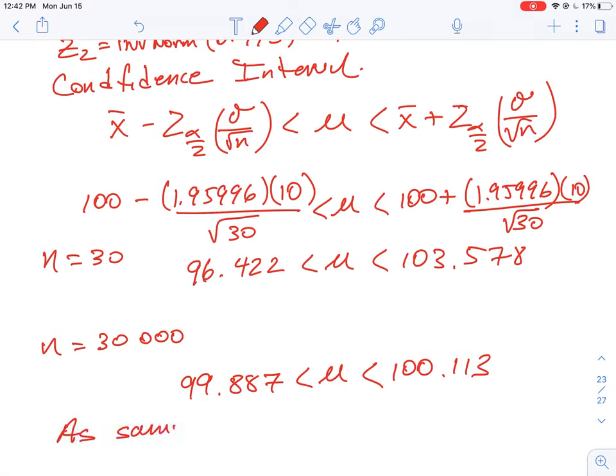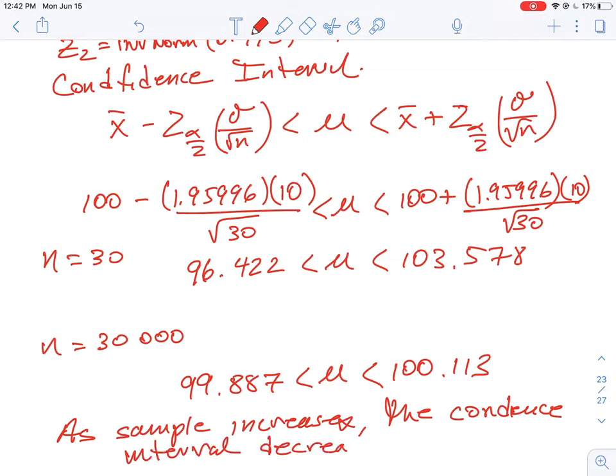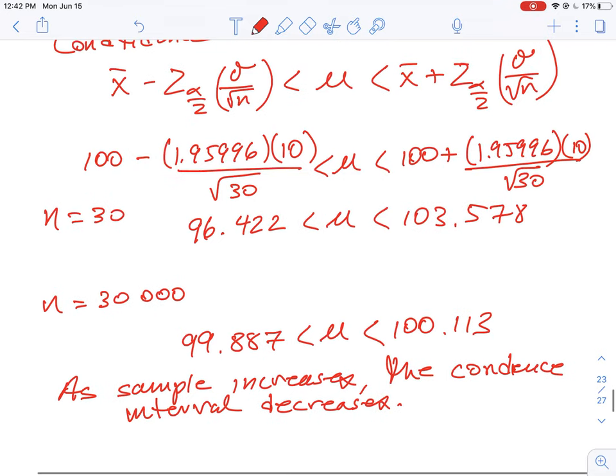So what that tells us is that as we increase the sample size, the confidence interval decreases. The actual range of values gets a little bit more accurate because we have a larger sample to work with. That's one of the rules that you want to see from the patterns here. So the first one we did, n is 30, and in the last one where n is equal to 30,000, we see the range get progressively smaller.